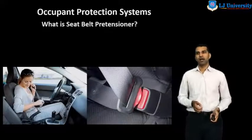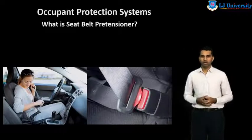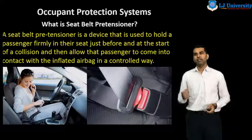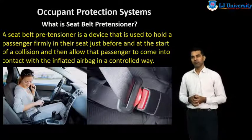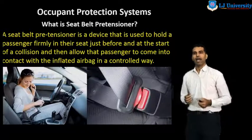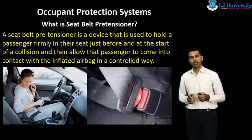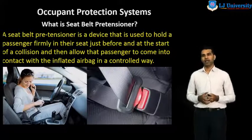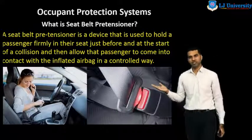Now we discuss about the seat belt. What is a seat belt pretensioner? A seat belt pretensioner is a device that is used to hold a passenger firmly in their seat just before and at the start of a collision, and then allows the passenger to come into contact with the inflated airbag in a controlled way. It is a very important feature in an accident.